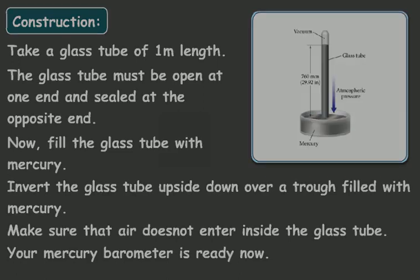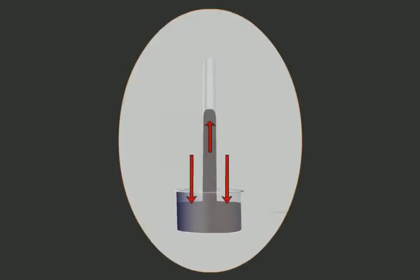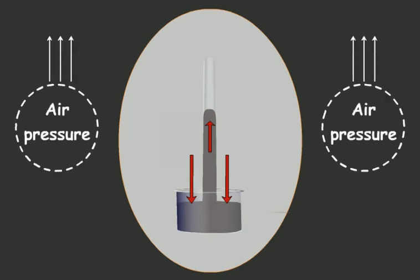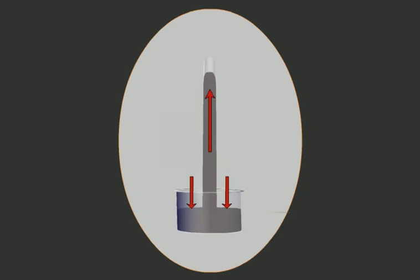Now if the air pressure is high, it presses down more on the surface of the mercury. This forces the mercury inside the column to rise higher.